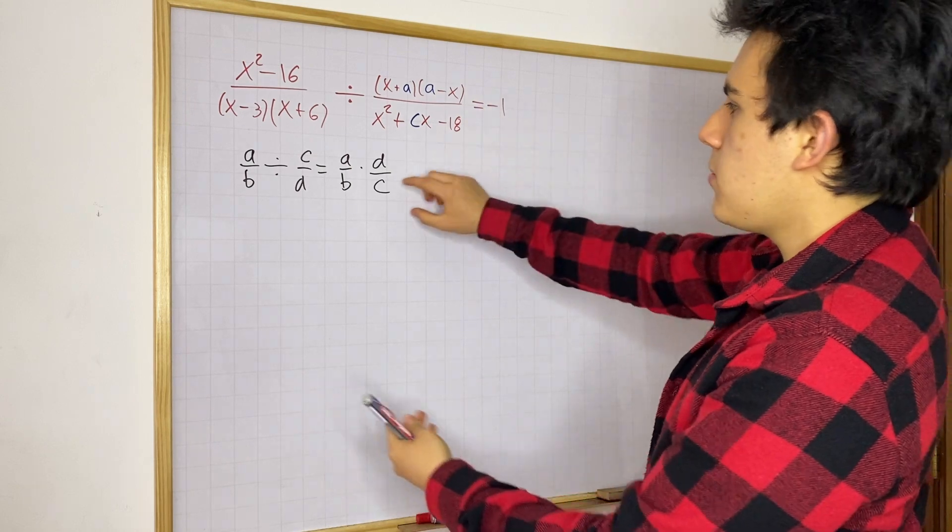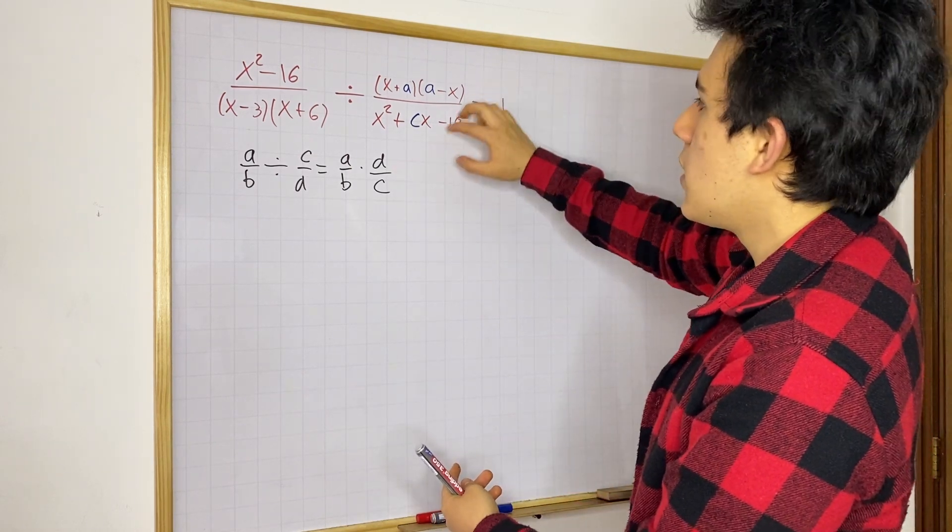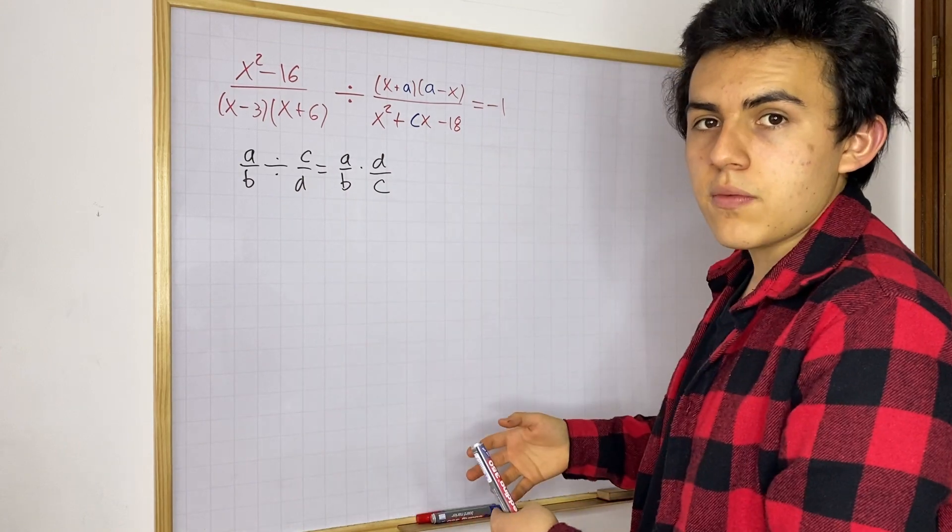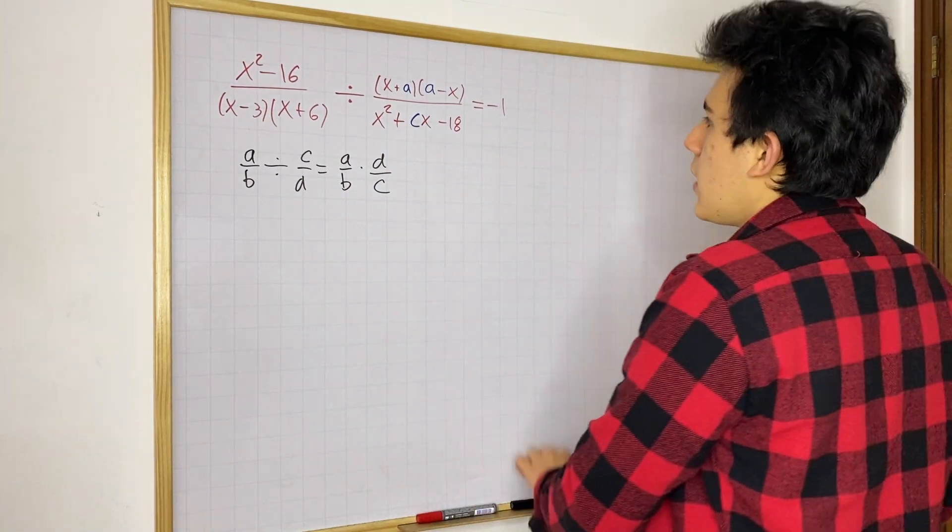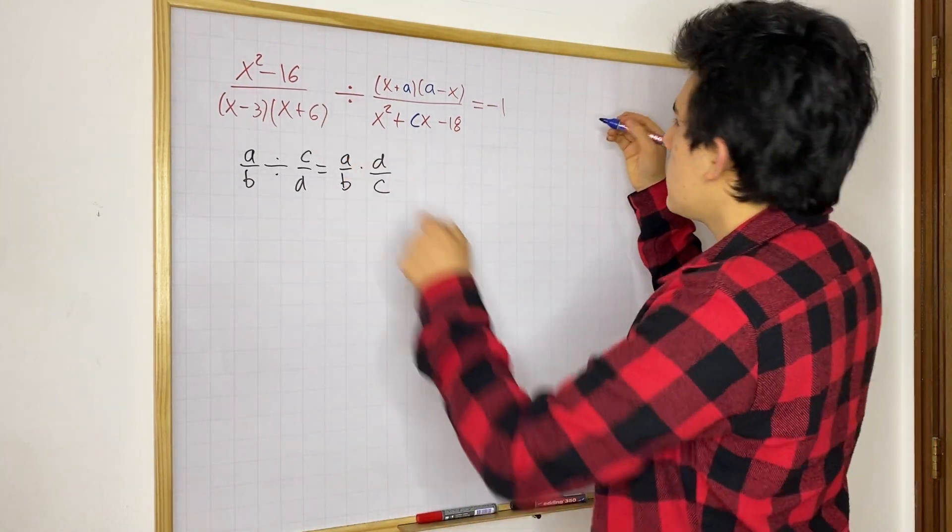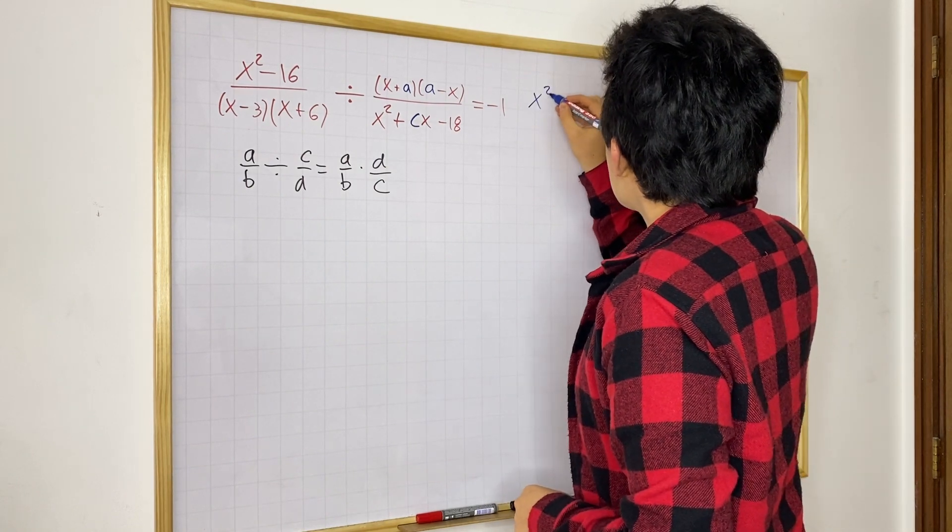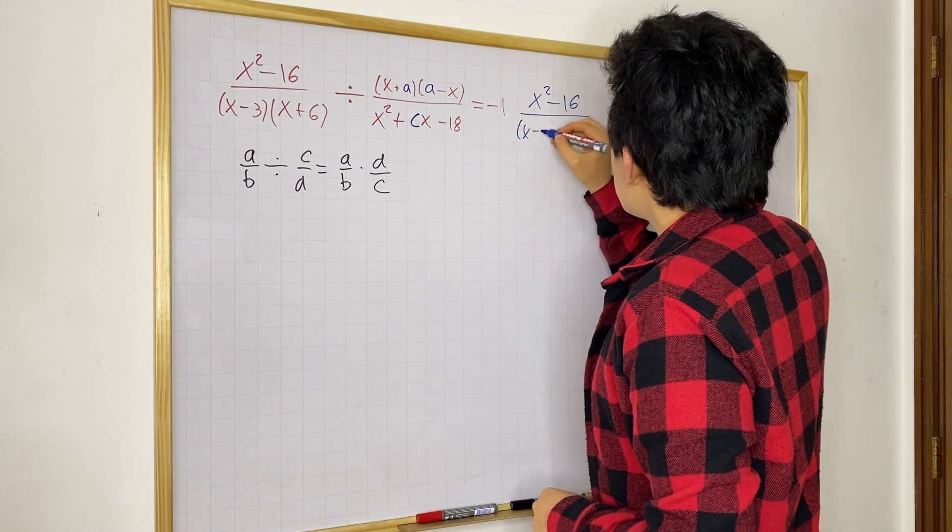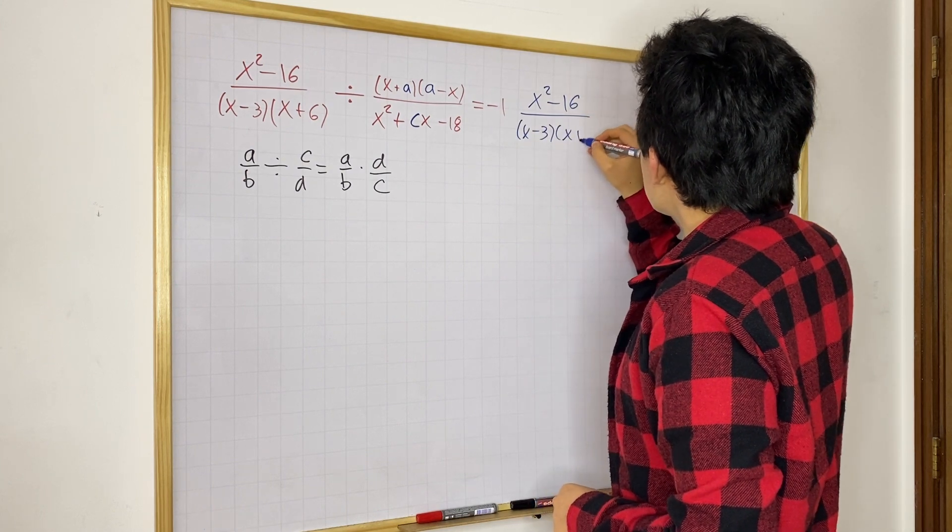Now, we have the same scenario in here. We have two fractions, and if we want to divide them, we can just simply multiply it by the inverse. So that would look something like this. We can write the entire thing again.